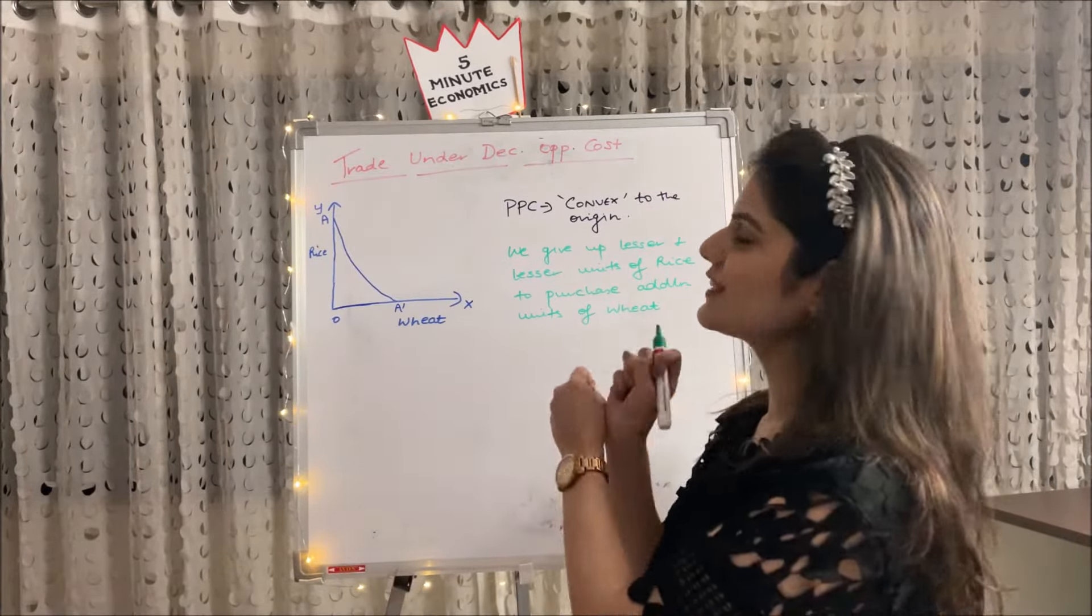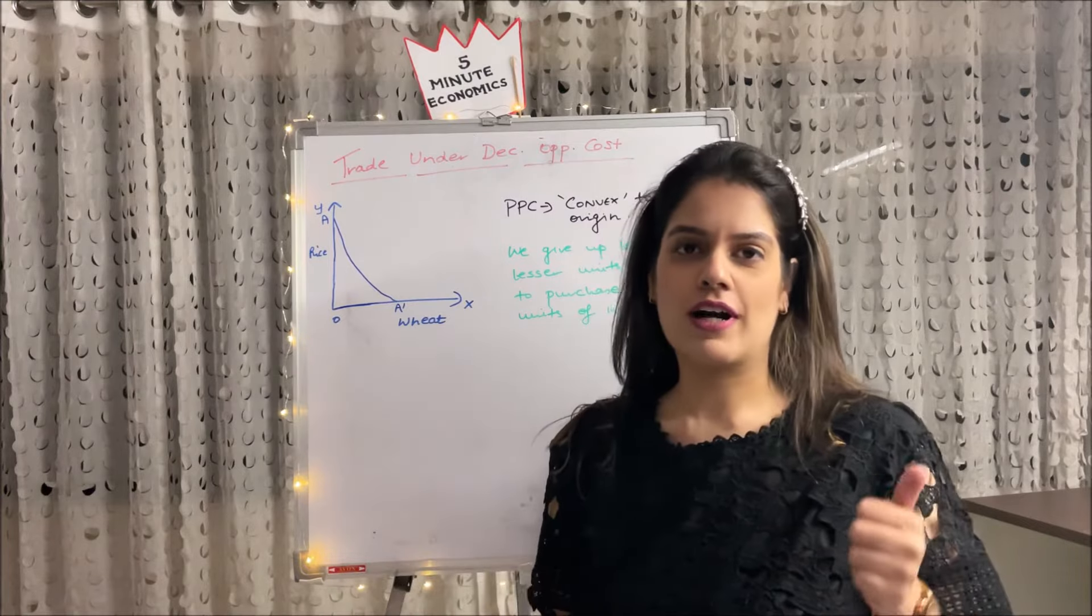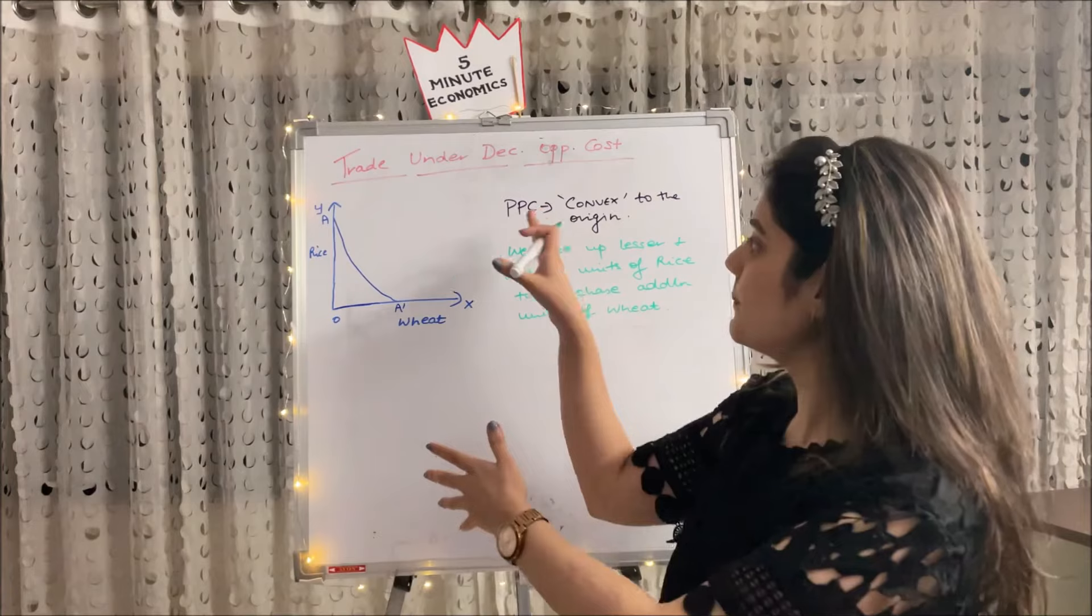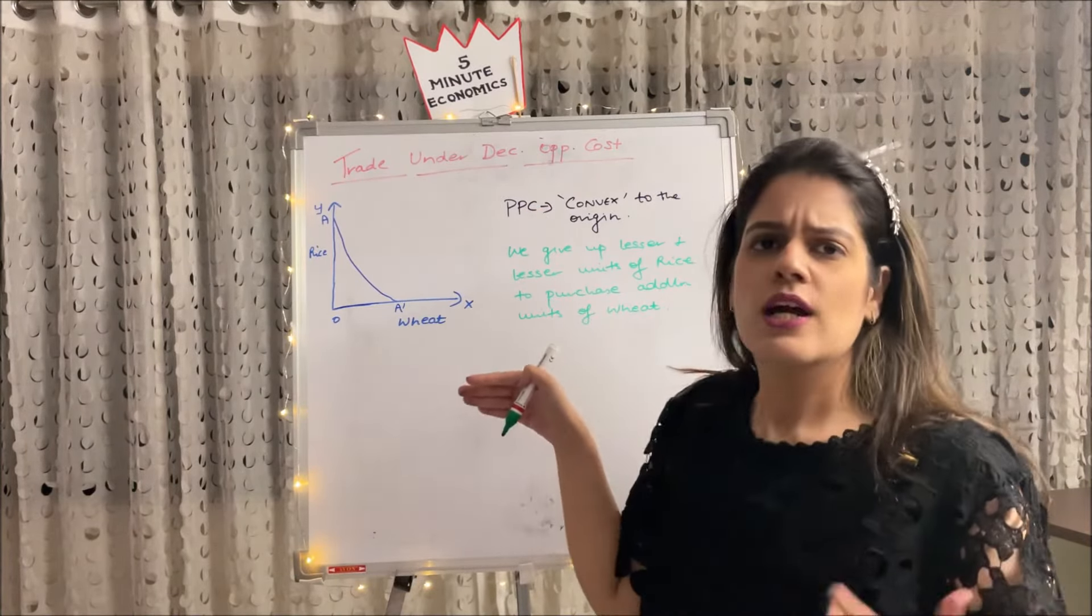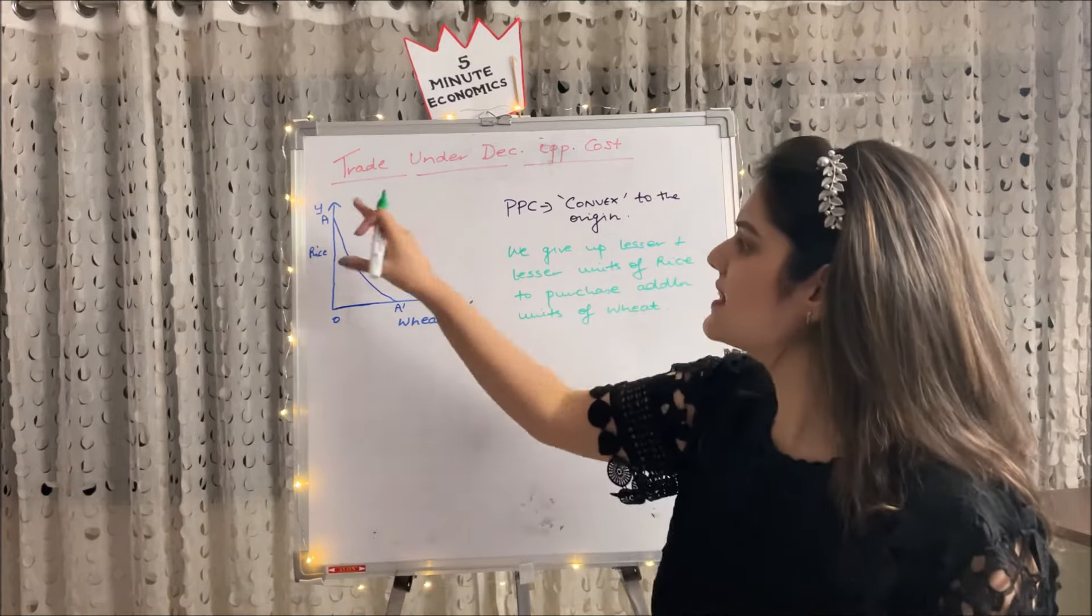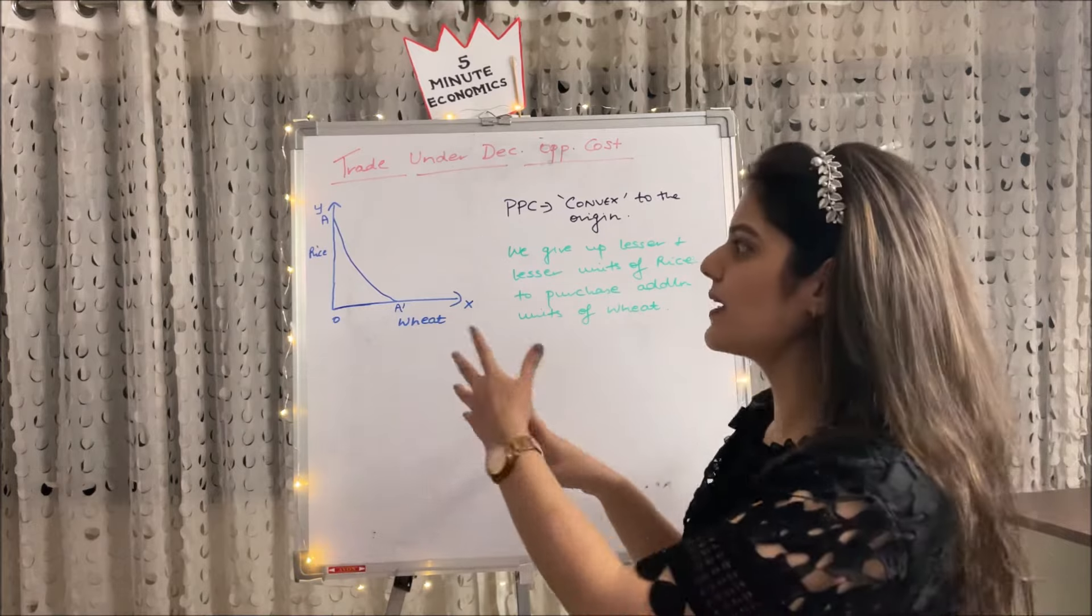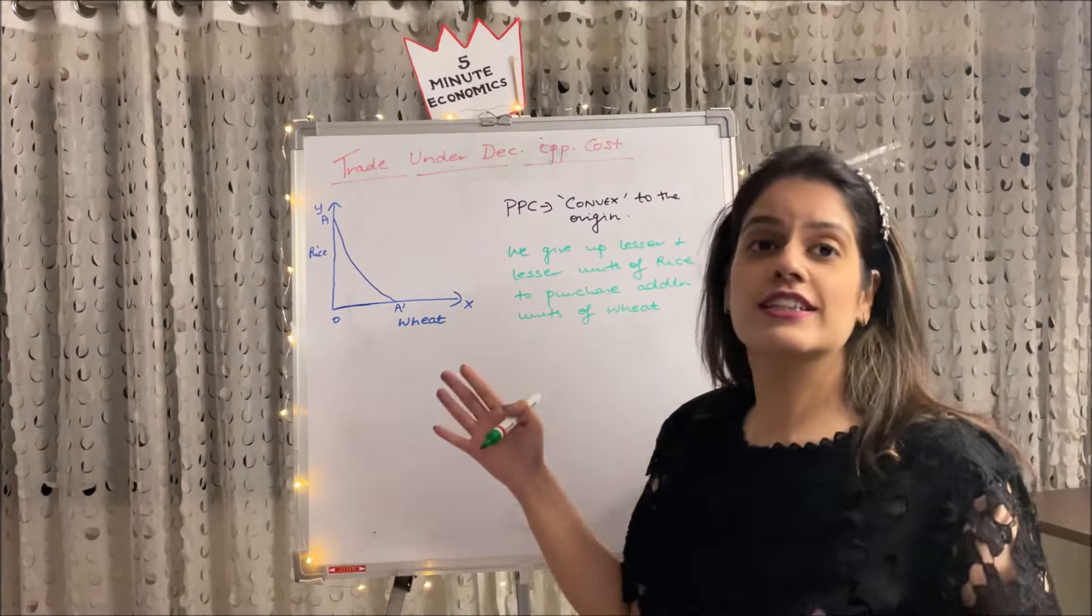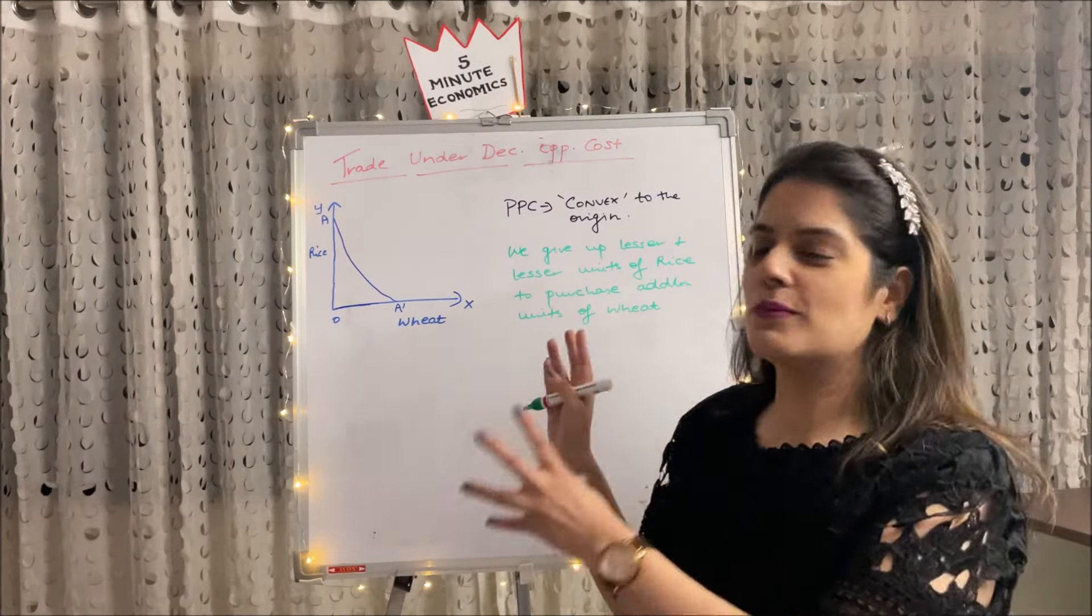So lastly, coming to trade under decreasing opportunity cost, which is like vice versa of our trade under increasing opportunity cost. Here, clearly, you can see the BB curve is convex to the origin. The shape clearly denotes it, which means that we give up less and less amount of rice in order to gain additional unit of wheat. For example, we are giving 5 units of rice to gain additional 10 units of wheat. So this is all about decreasing opportunity cost.